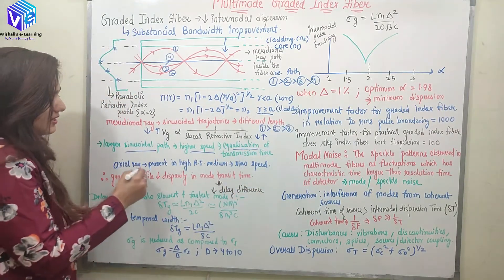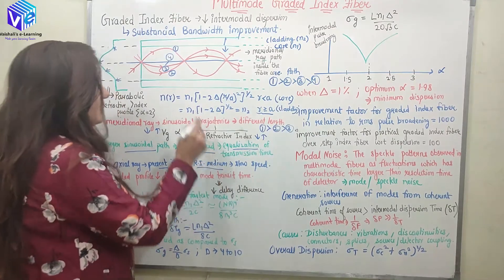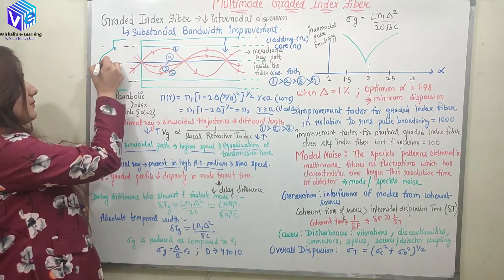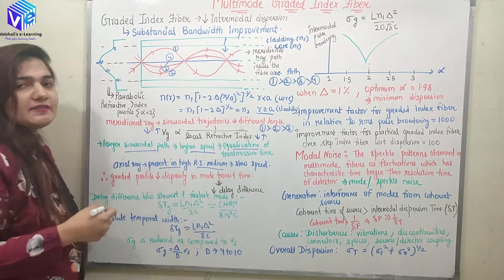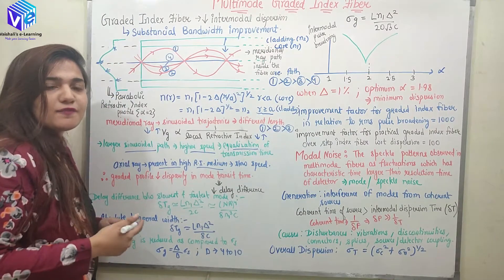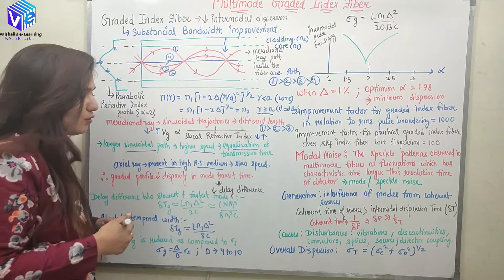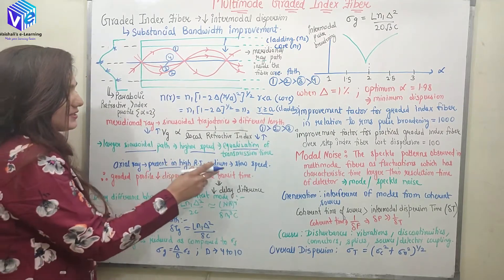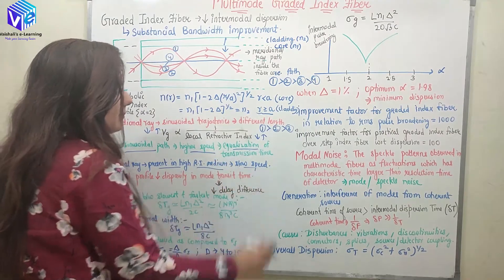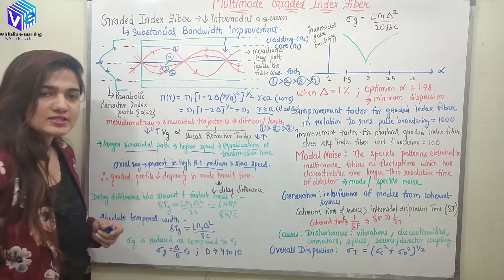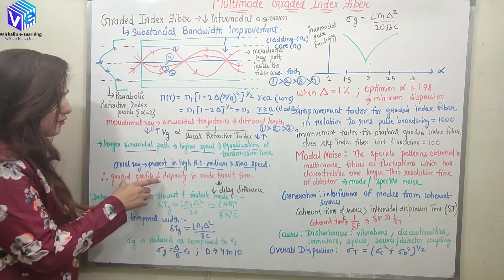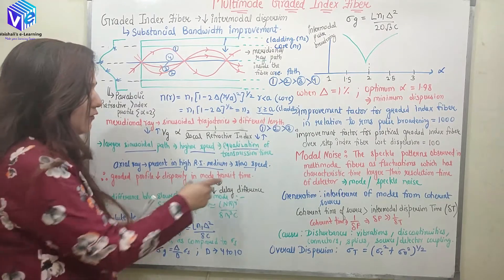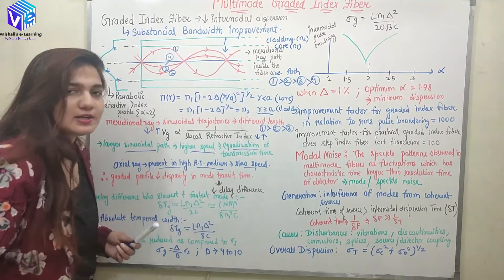The axial ray is present in the highest refractive index medium — the highest refractive index is at the center of the core, which is the axis, and so the axial ray travels with the slowest speed. The graded profile reduces the disparity in mode transit time and this is how it reduces the delay difference.